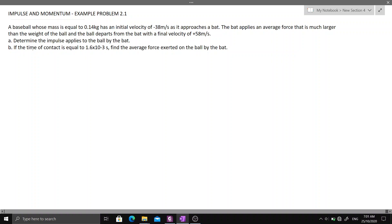So for letter A, we know that impulse J is equal to mass times final velocity minus mass times initial velocity.